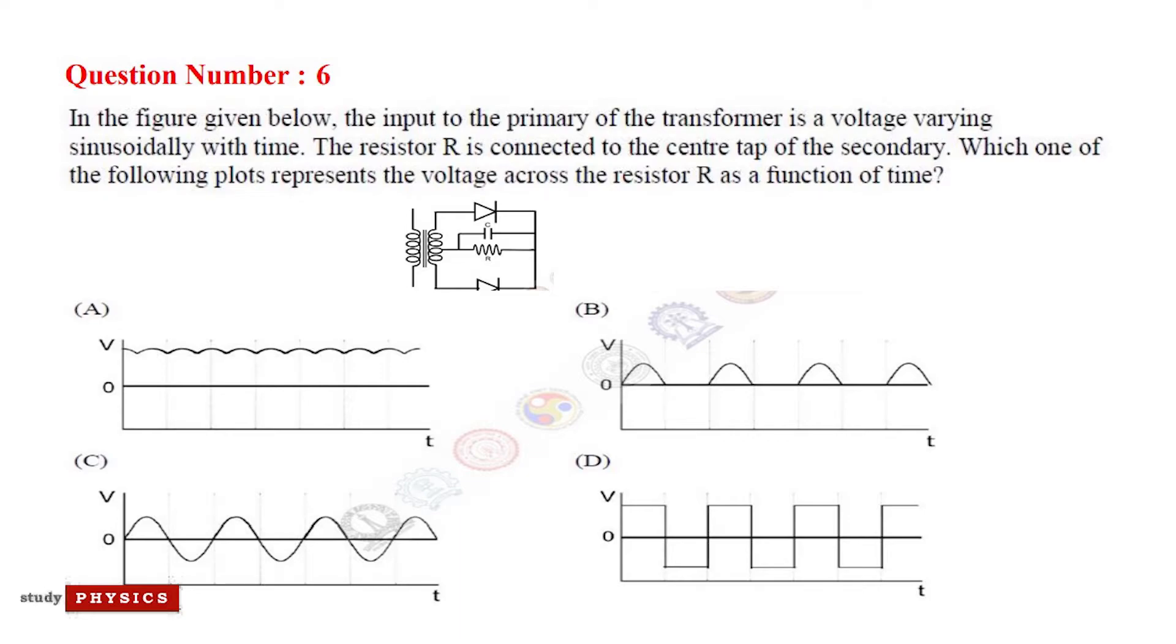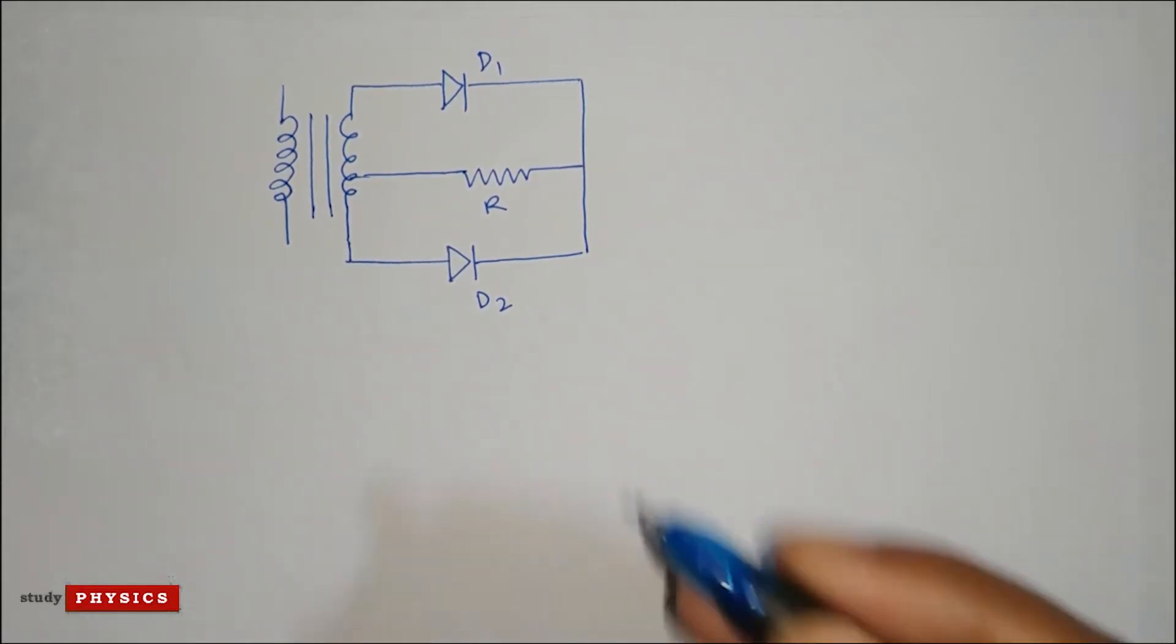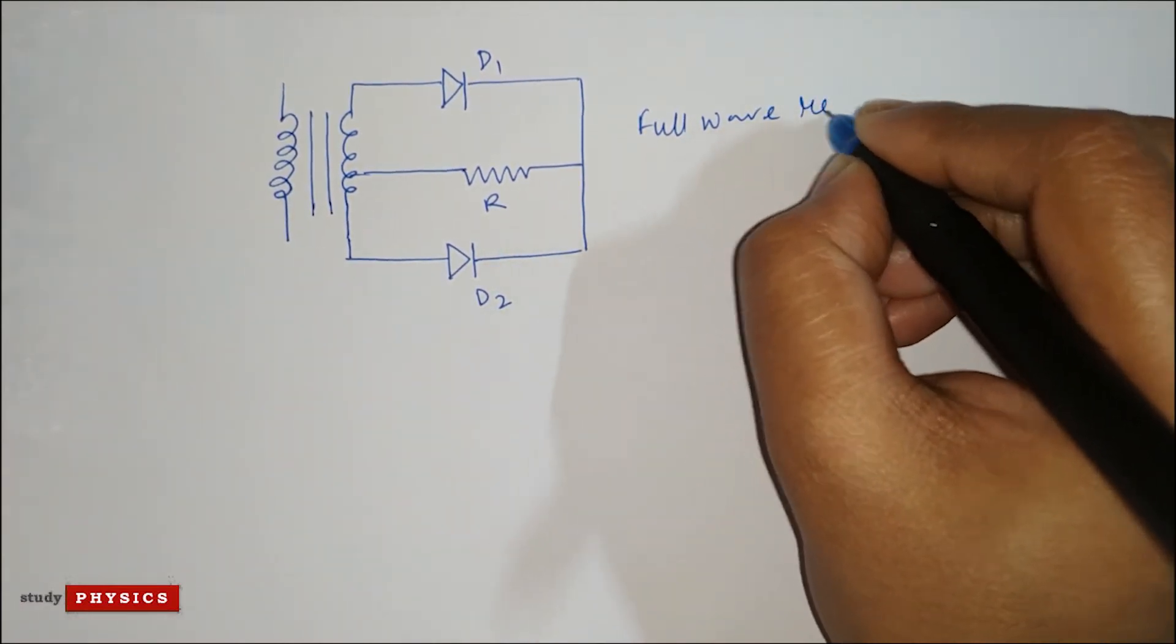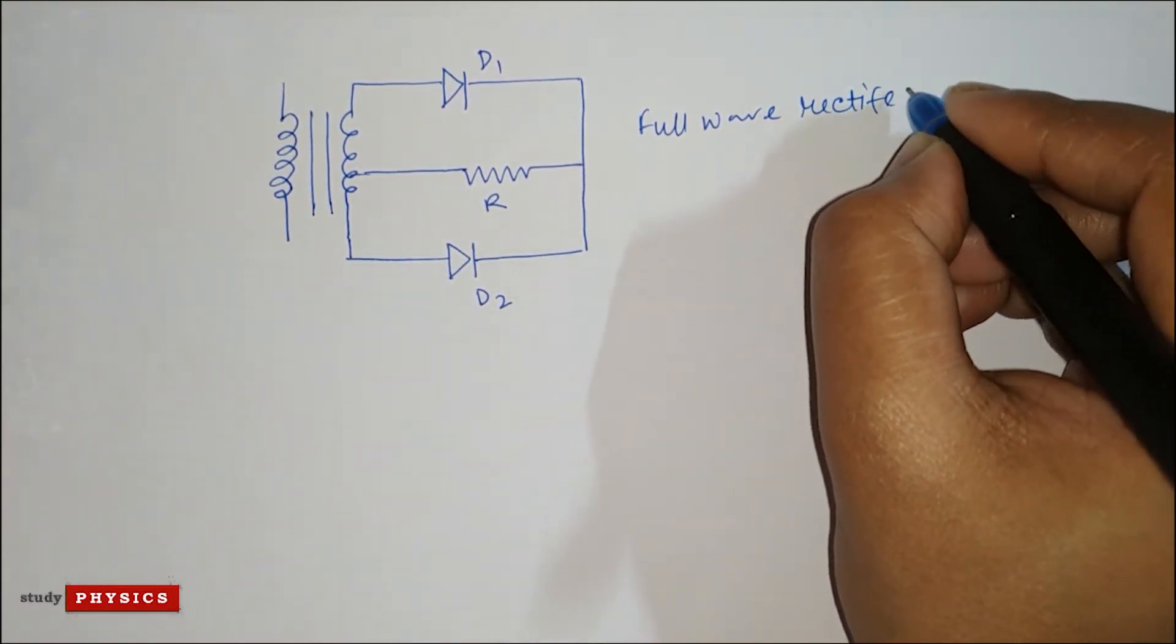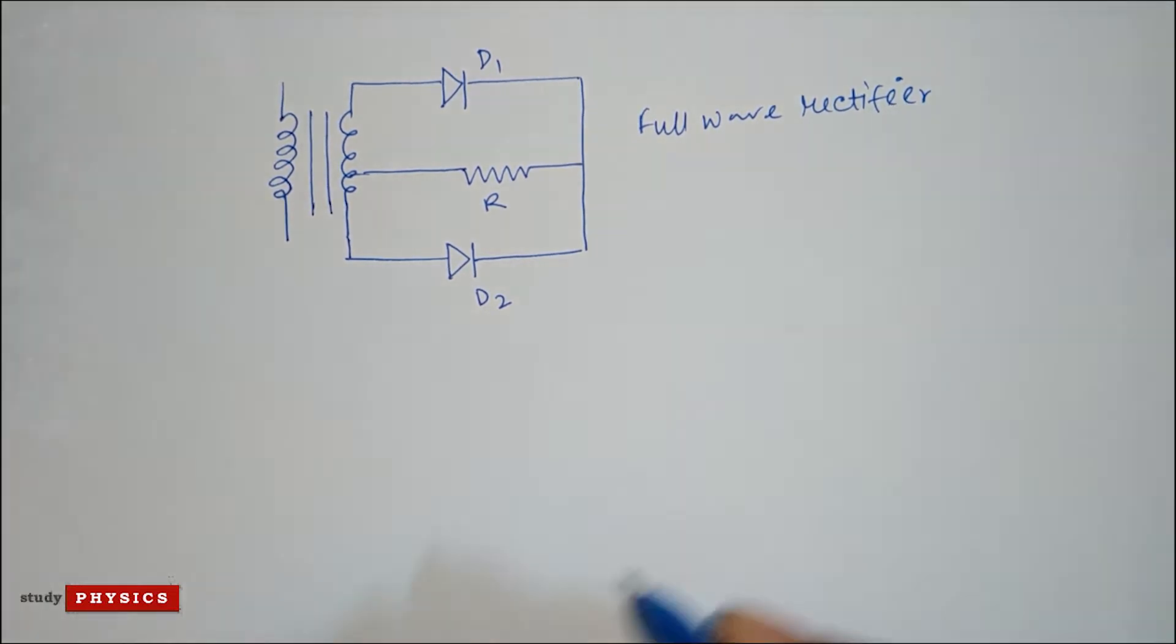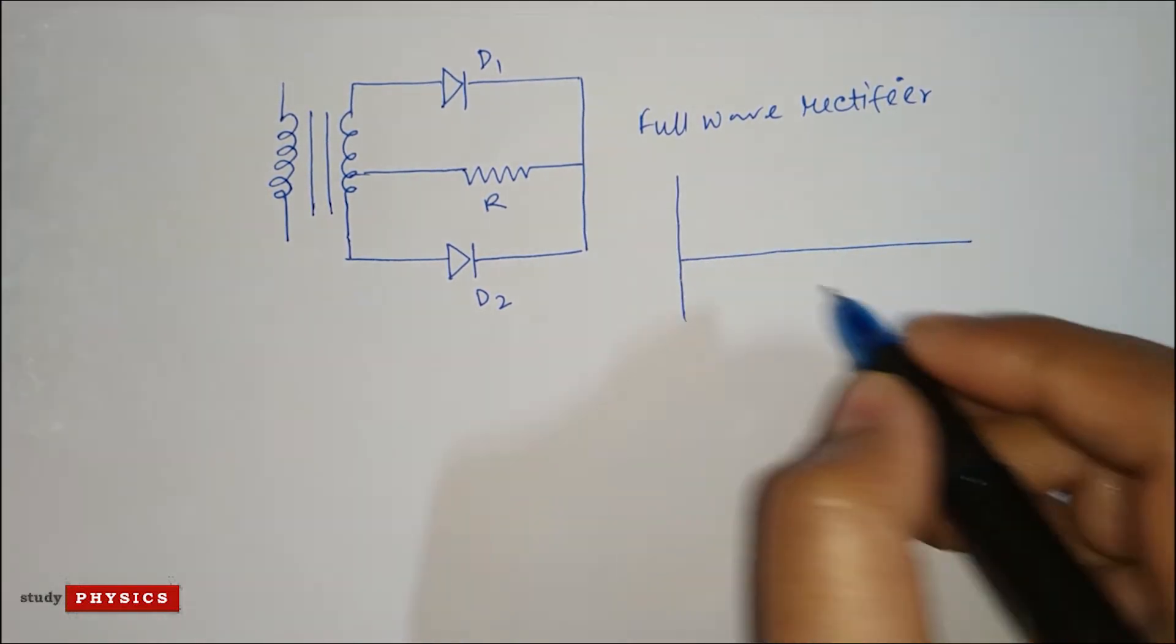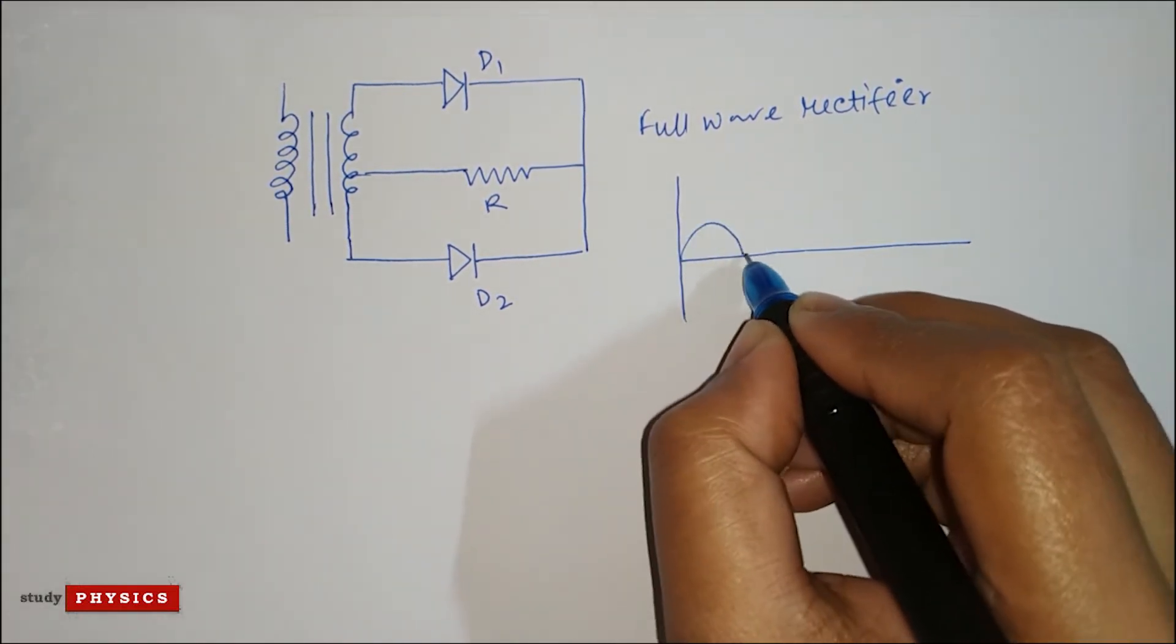And these are the four options. This is basically a full wave rectifier. When we deal with a full wave rectifier, the DC output waveform looks like this.